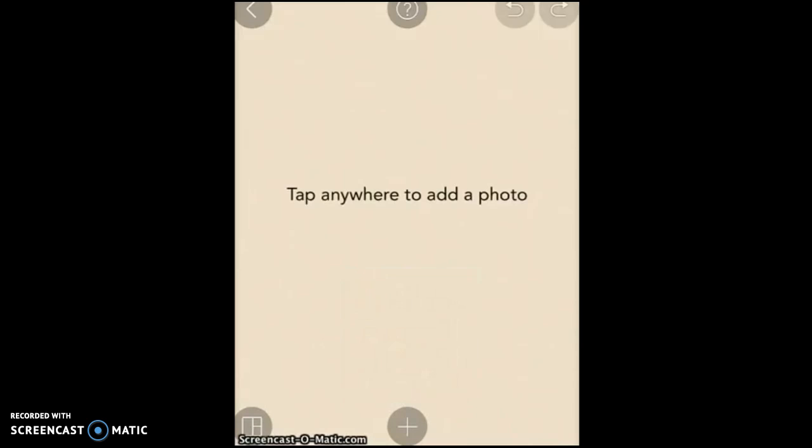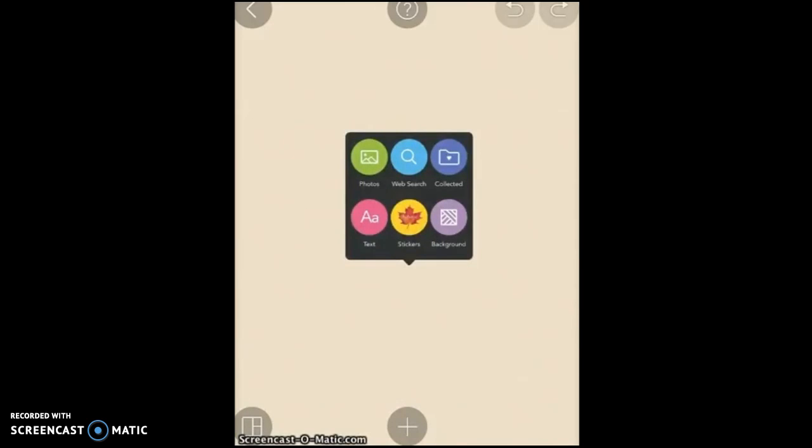Basically, when you tap on the app, you are able to tap anywhere to add a photo. It goes directly to the child's camera roll. These could be pictures that they drew, or they could be pictures that they've taken that demonstrate their learning in some way.